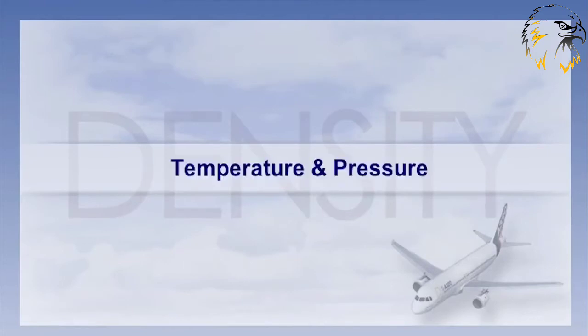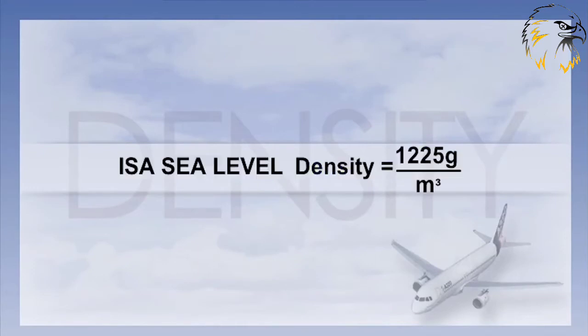These are temperature and pressure. Looking at the diagram we can see the density formula. Notice that in the formula we replace density with the Greek symbol rho. We'll now look at how the variables of temperature and pressure affect the mass or volume and therefore the density.